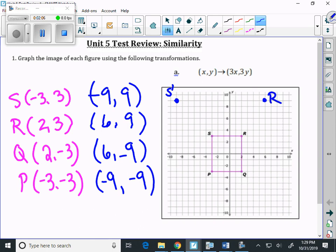Q is going to become 6, negative 9. Here's our new q. And p is going to be negative 9, negative 9. And we'll draw in our dilated figure.